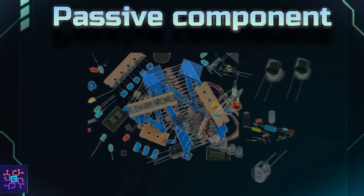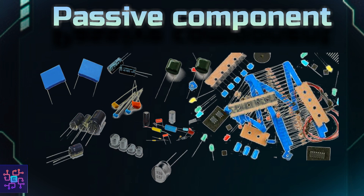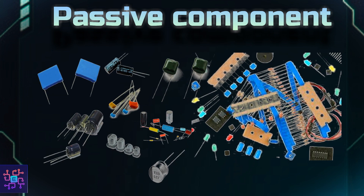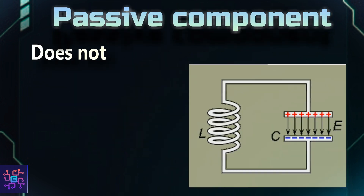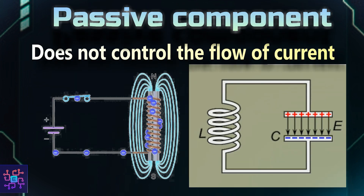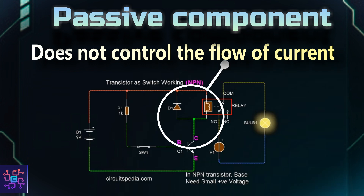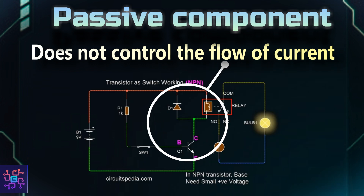Most passive components have only two terminals, as they do not control the flow of current. Passive components use the power delivered by active components to produce the desired output.